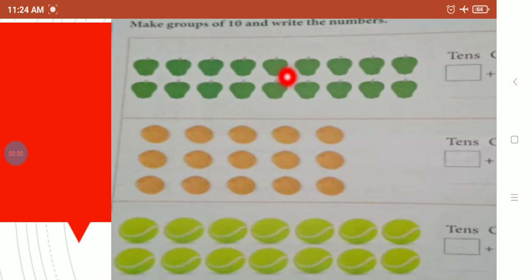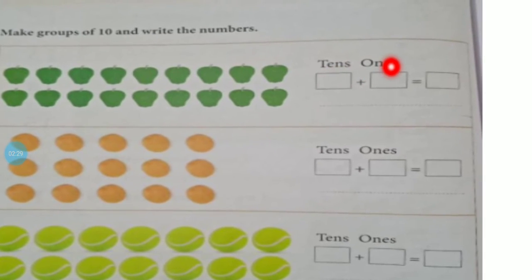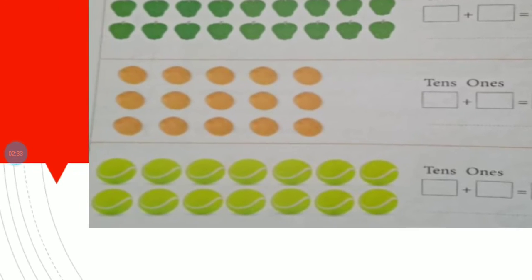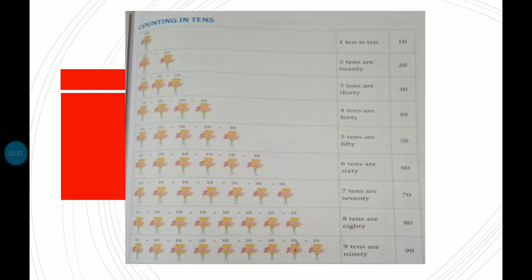Make a bunch of ten apples. How many remain? One, two, three, four, five, six, seven, eight. So tens we have one, and ones we have eight. Write one in tens and eight in ones. Same way you have to solve the oranges and the balls. Now moving to the next concept.